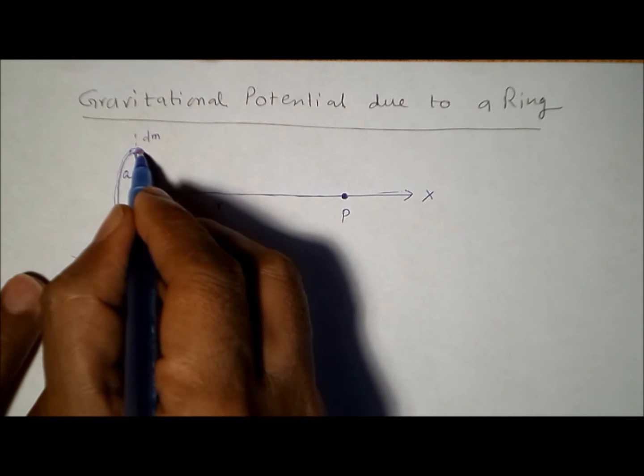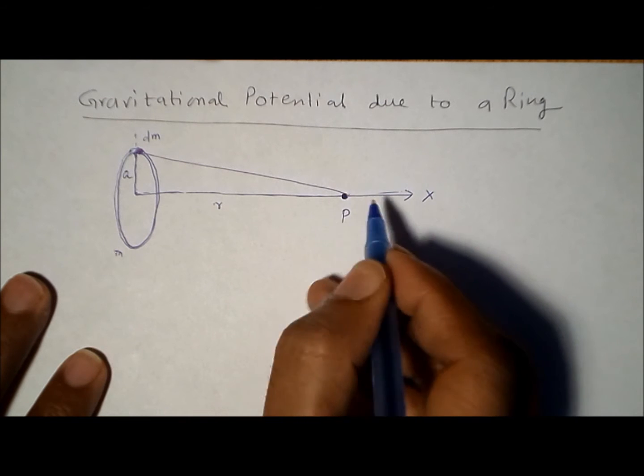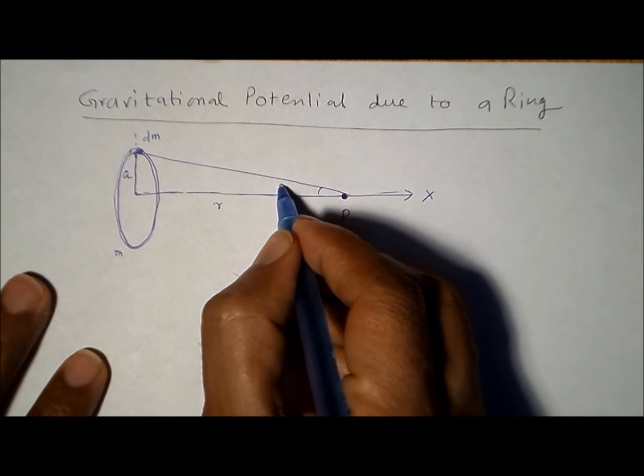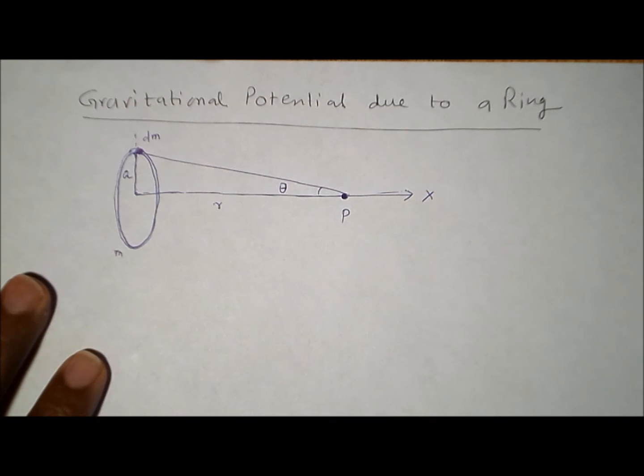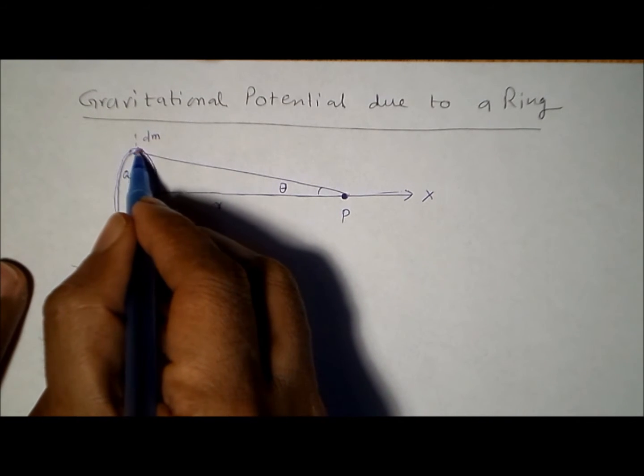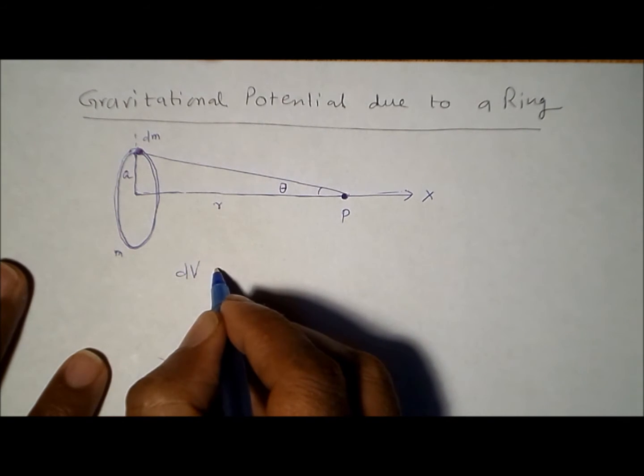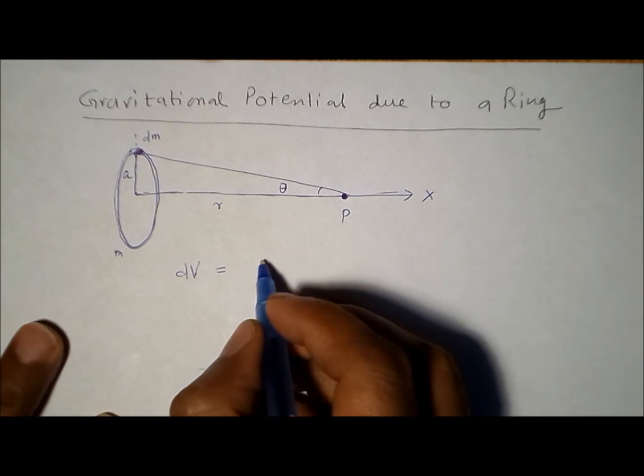Imagine a very thin slice of this ring, and it has a mass of dm. We join this point to the point P and let's say this angle is theta. So the electric potential due to this small mass dm at point P is given by dV equal to...